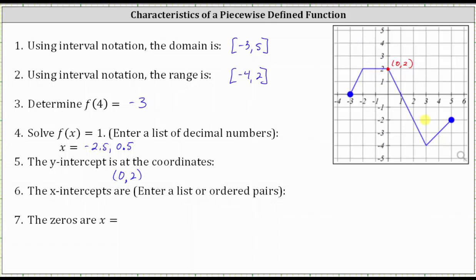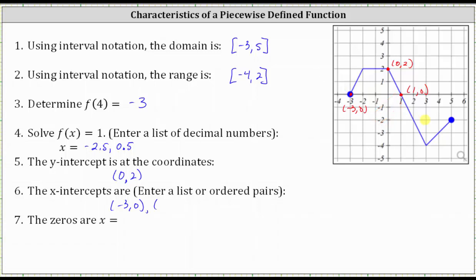Number six, we're asked to find the x-intercepts of the graph, which is where the graph touches or crosses the horizontal or x-axis. Notice how this occurs in two places: the graph touches the x-axis at the point negative 3, comma 0, and crosses the x-axis at the point 1, comma 0. So we have two x-intercepts given as ordered pairs: negative 3, comma 0 and 1, comma 0.